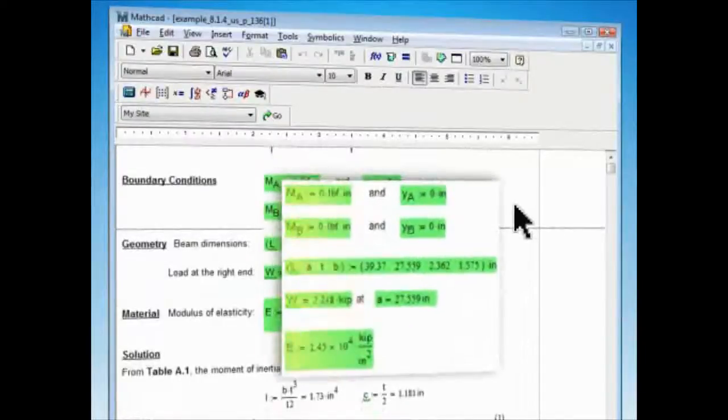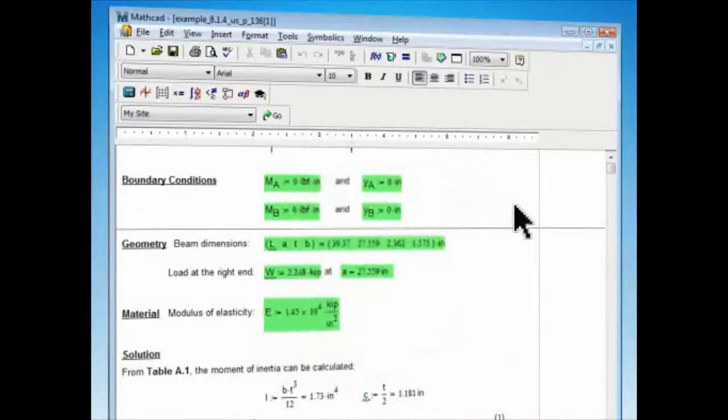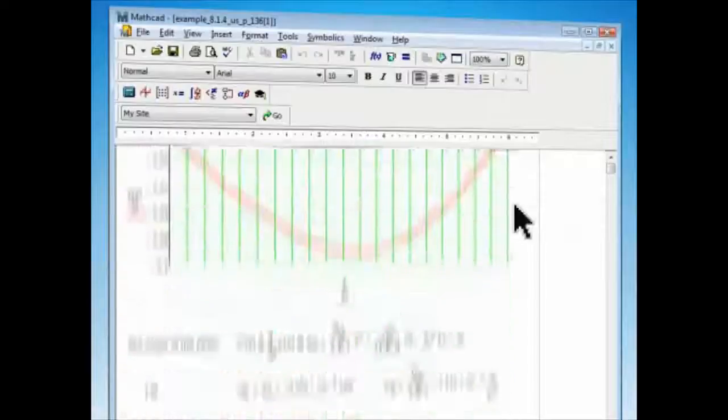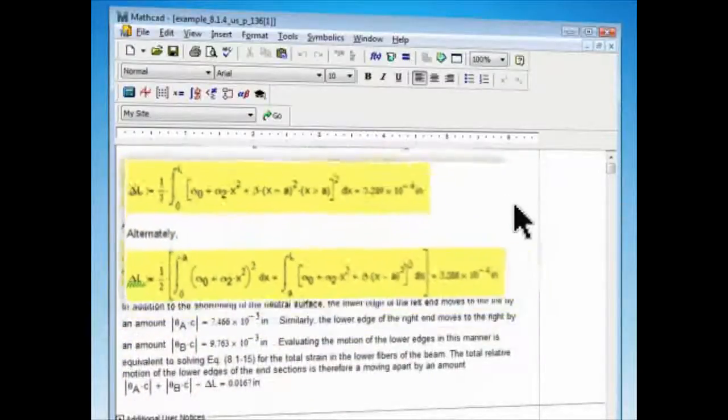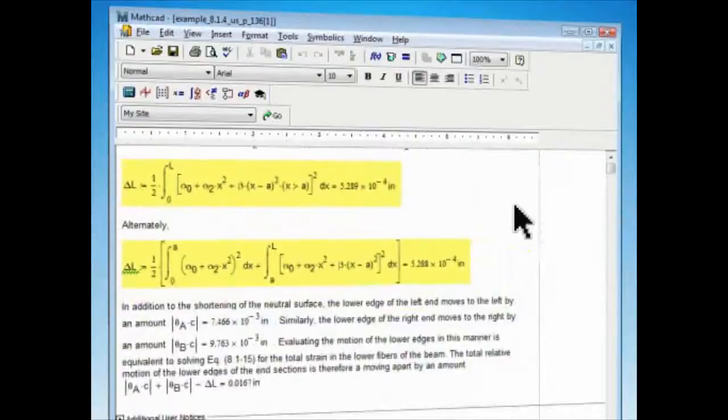Green represents input variables that I can change to reflect my requirements, while yellow indicates output values or the numerical solution of the equation.